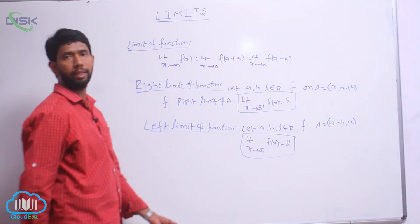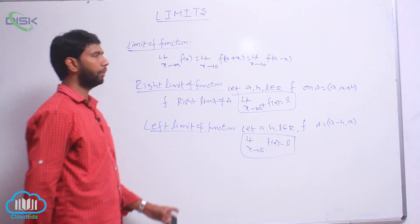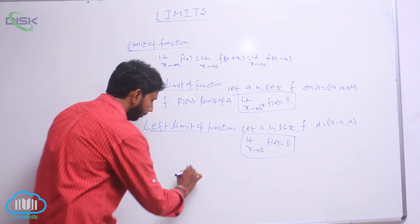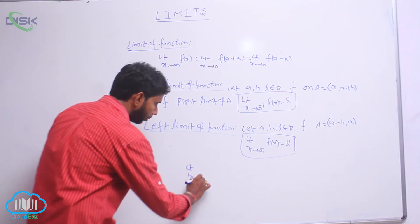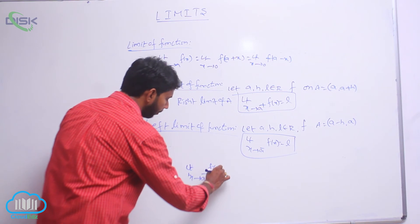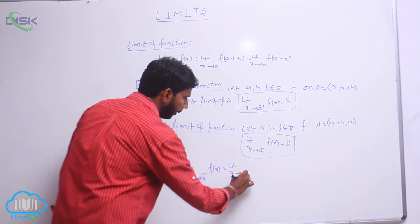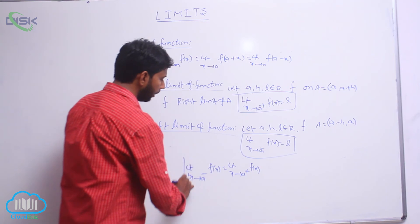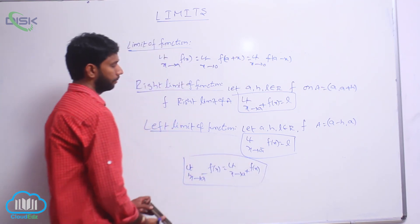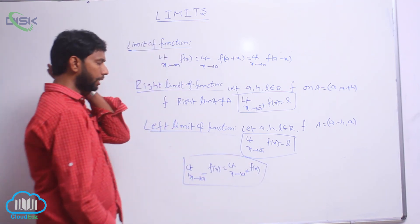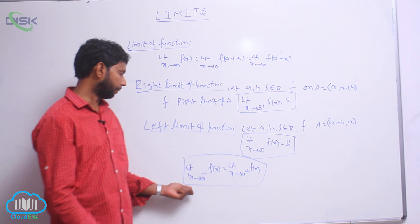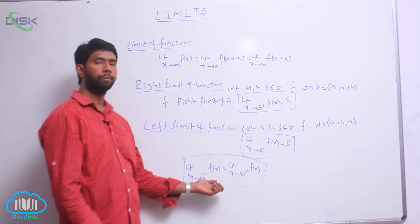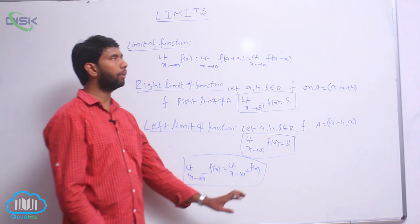Suppose the function has a limit that exists at x equal to a. If the function has a limit that exists at x equal to a, then limit x tends to a minus of f(x) is equal to limit x tends to a plus of f(x).